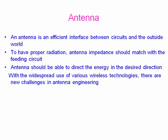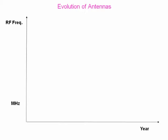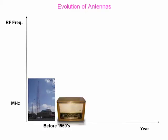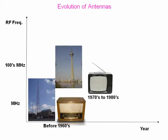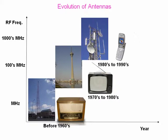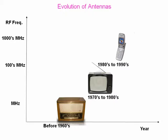With widespread use of various technologies, there are new challenges in antenna engineering. This picture shows the evolution of antenna. Before 1960s, tower antennas were used and radios were used to receive the signal. During 1970s to 1980s, tower antennas were again used but at the receiver side, transistor antennas were used. During 1980s to 1990s, mobile communication evolved and we had a very compact system for transmitting and receiving the signal. Considering the evolution of antennas, there has been a reduction in size of the antenna and hence the wireless system. Now we are in the era of millimeter waves.